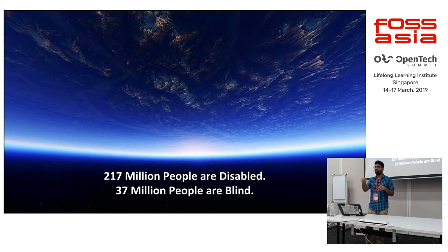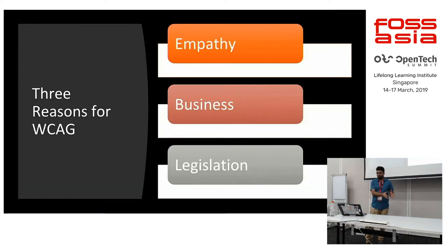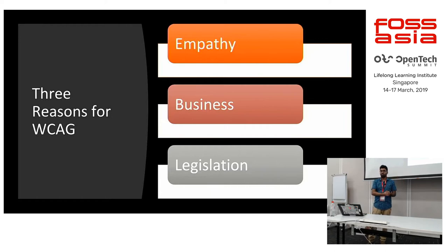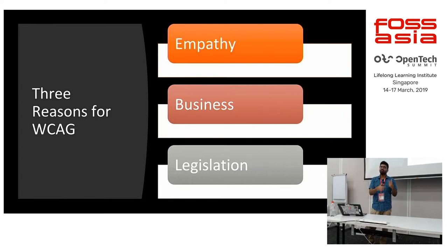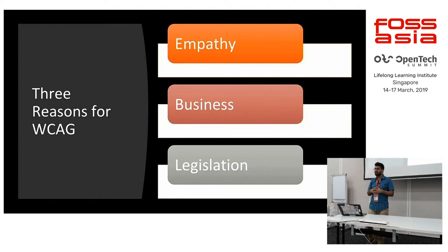You can see such huge numbers — you are not talking about three or four people sitting in a row. You are talking about 217 million people for whom you can make a website. Now it's not only about empathy — it's also about business and legalities. When I talk about this topic to many developers, they always think about it from an empathy angle, saying they'll care about those people. But there is another angle to this whole cycle, and that angle is business.